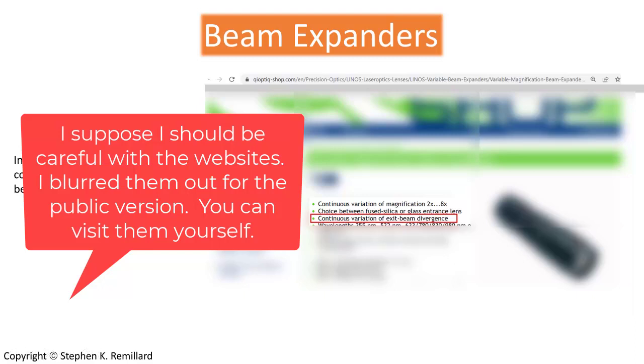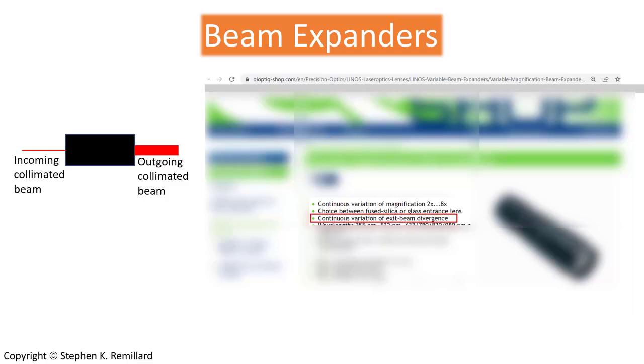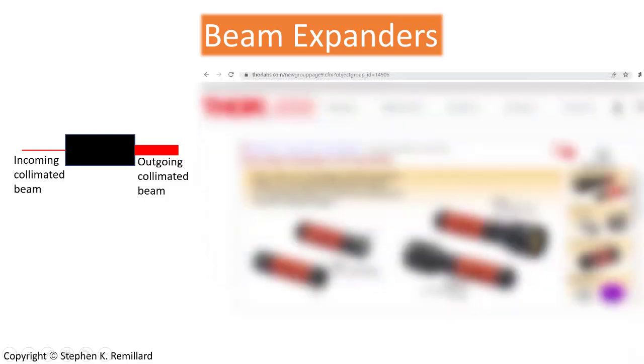You may not want it to be perfectly collimated, and you have a say in that by adjusting it with these two adjustment rings, one of which adjusts the magnification, and one adjusts the collimation. And the same is the case with the Thor Labs product, you have these two rings on all of them.